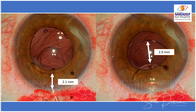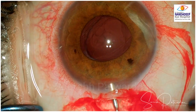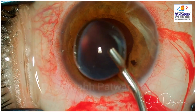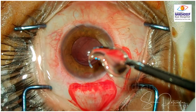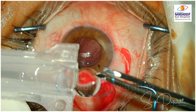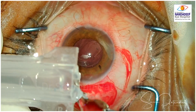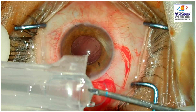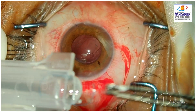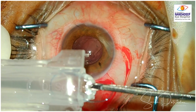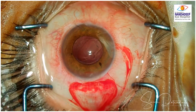This is probably why the IOL was decentered in this case — otherwise, if the haptics were good, this IOL would have centered very well. Now I am going to use a 3-piece foldable IOL; a 3-piece PMMA IOL will also do if available. PMMA haptics are much better for sulcus placement because of their springy action — they fit into the sulcus well.